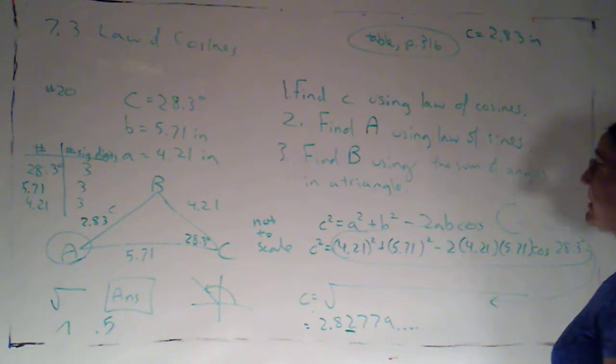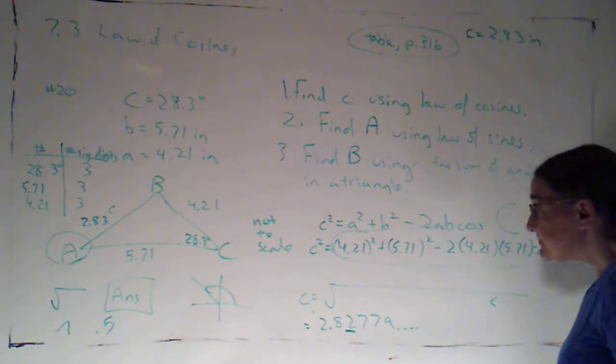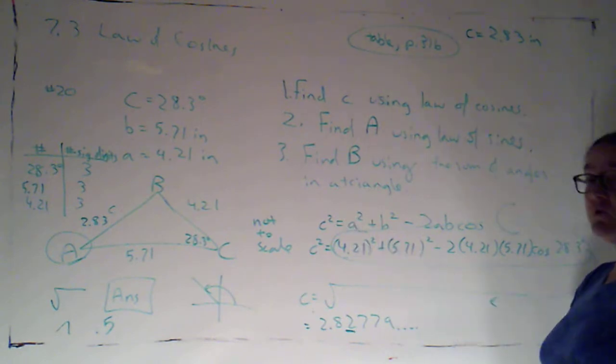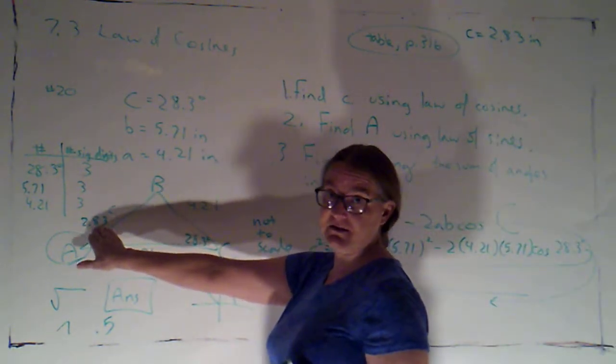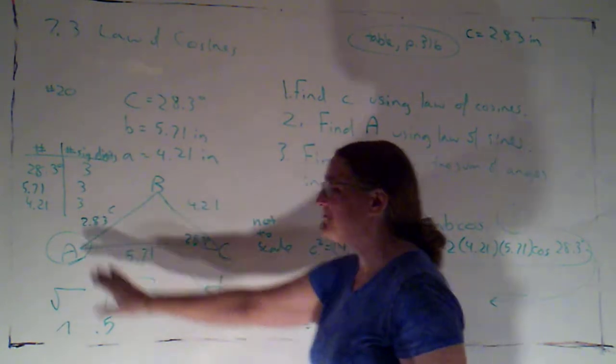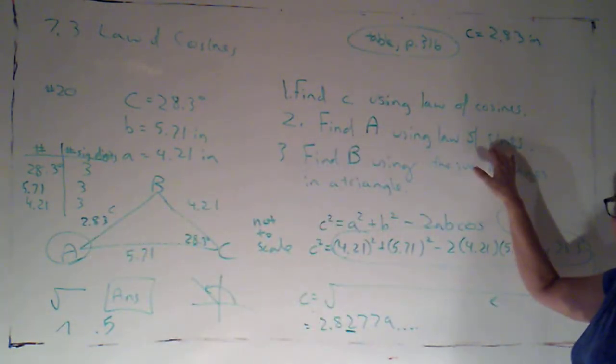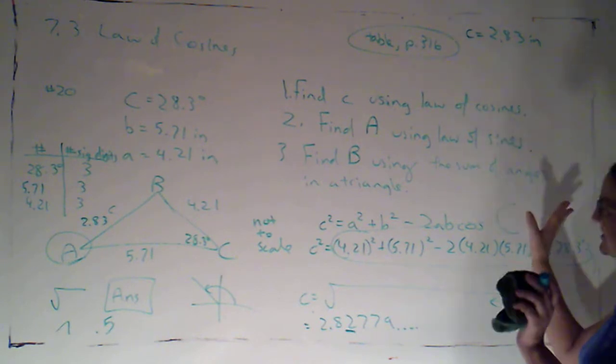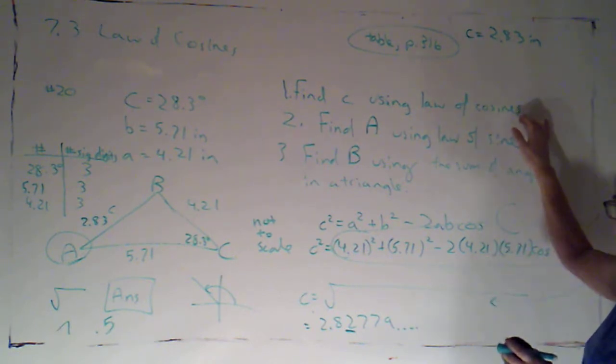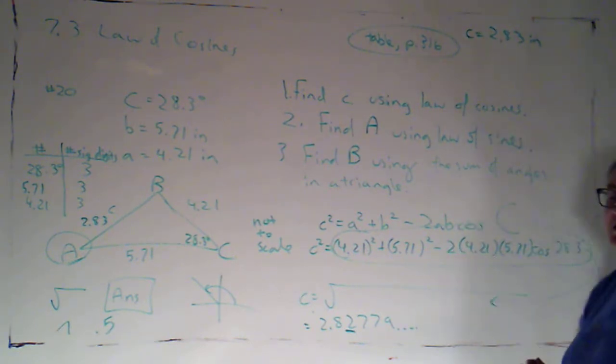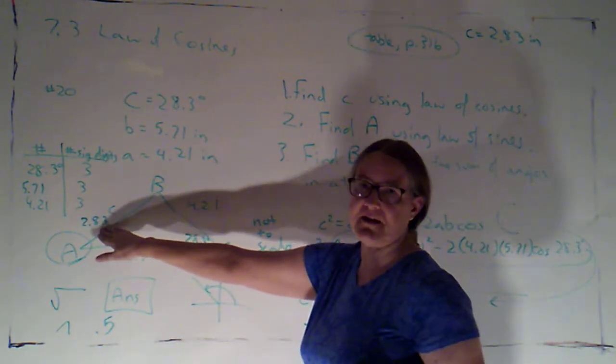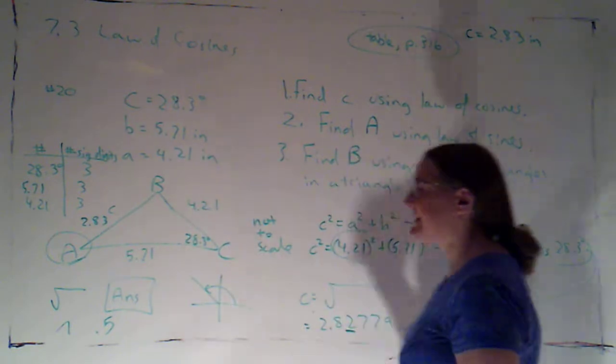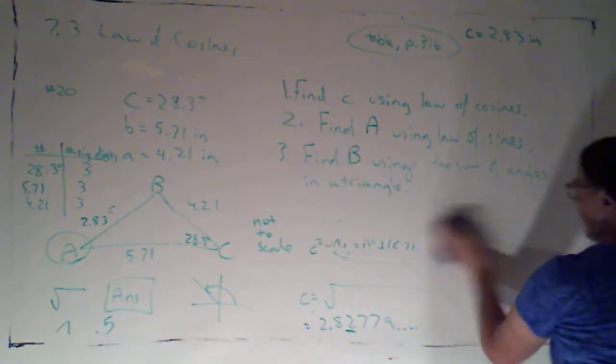Now, technically, it would be better to use law of cosines again because that way I could use only the given information and not use this value that I just calculated. However, law of sines is so much more convenient than law of cosines that the book sets the example that they use law of cosines once and then they switch to law of sines using the calculated value that you got from the first step. So, since the book sets that example, I will allow you to follow that example.